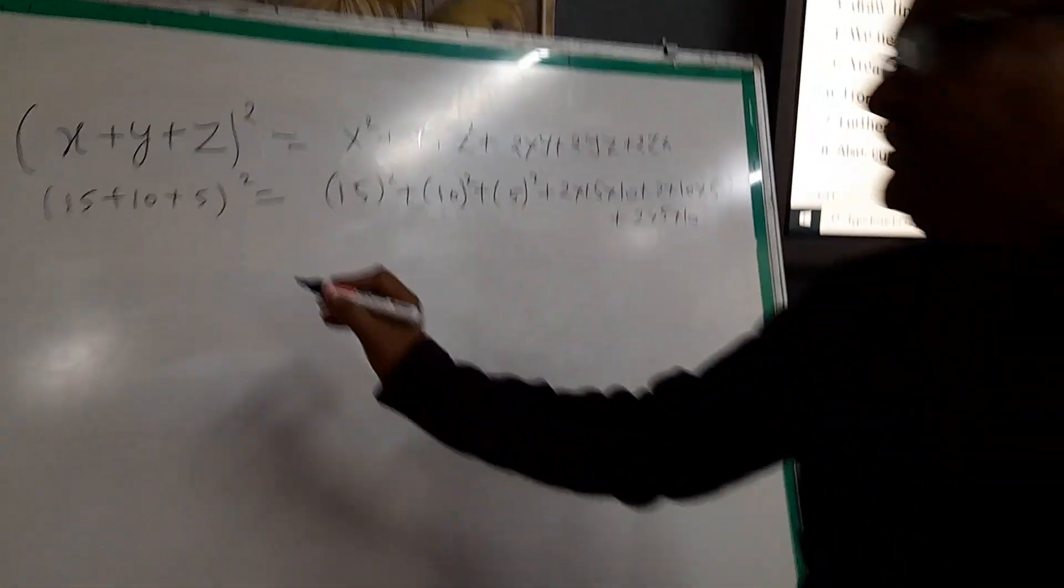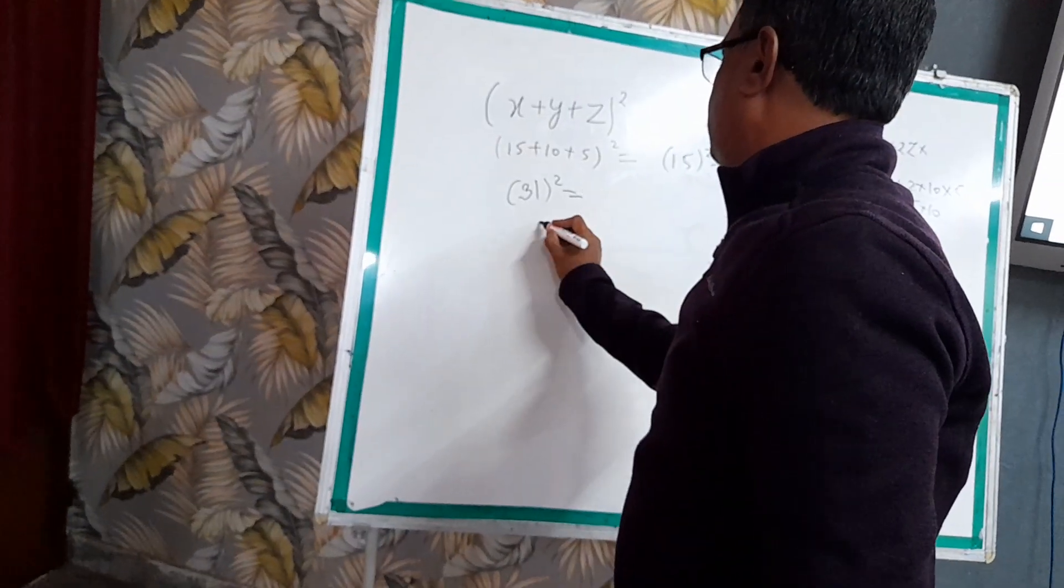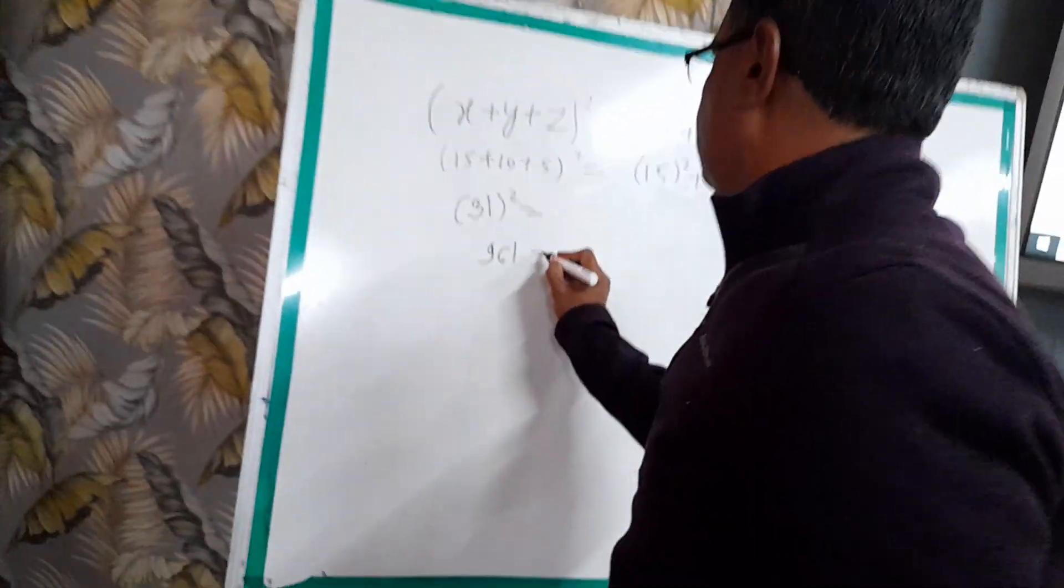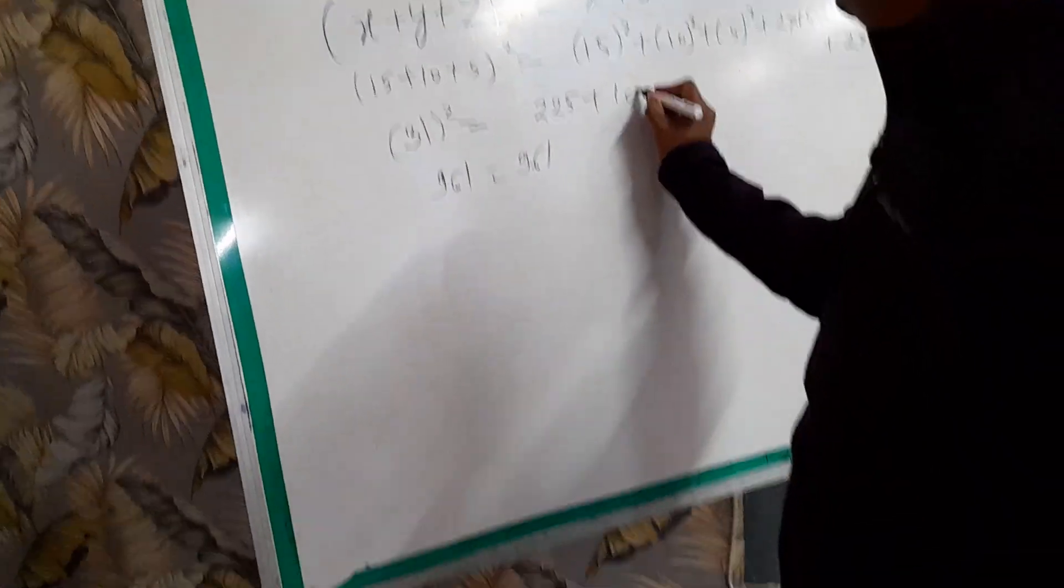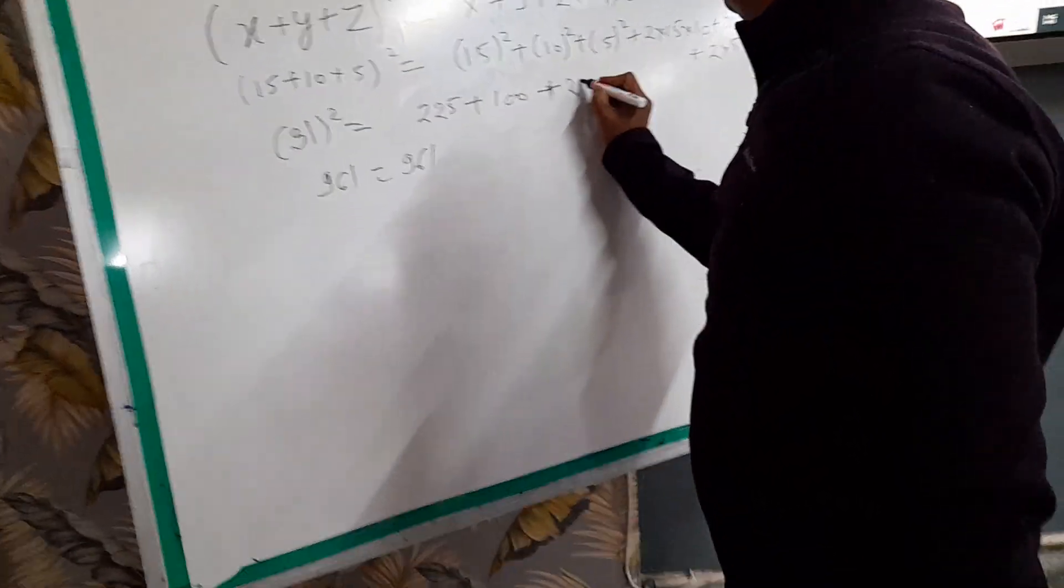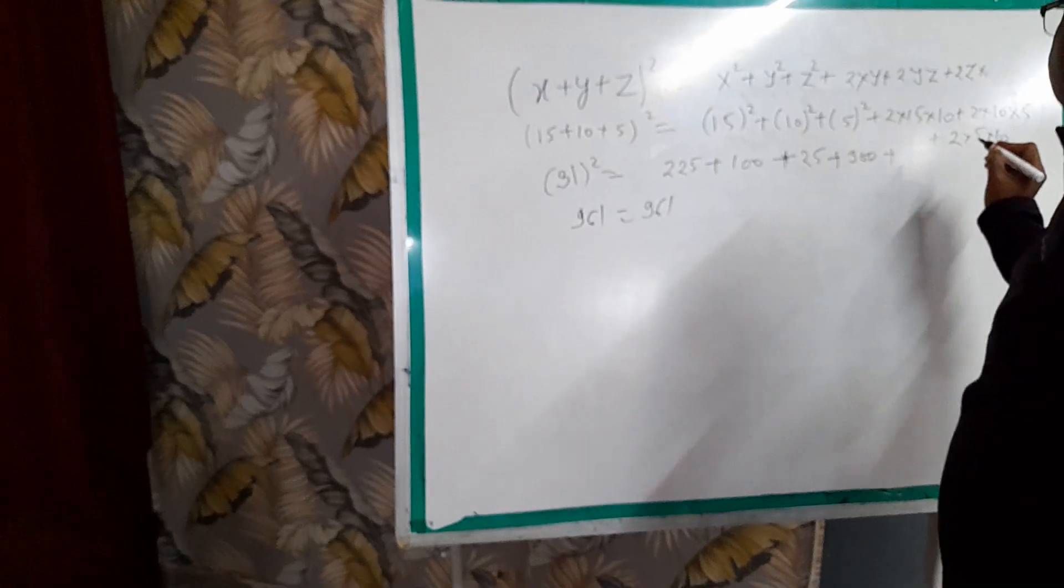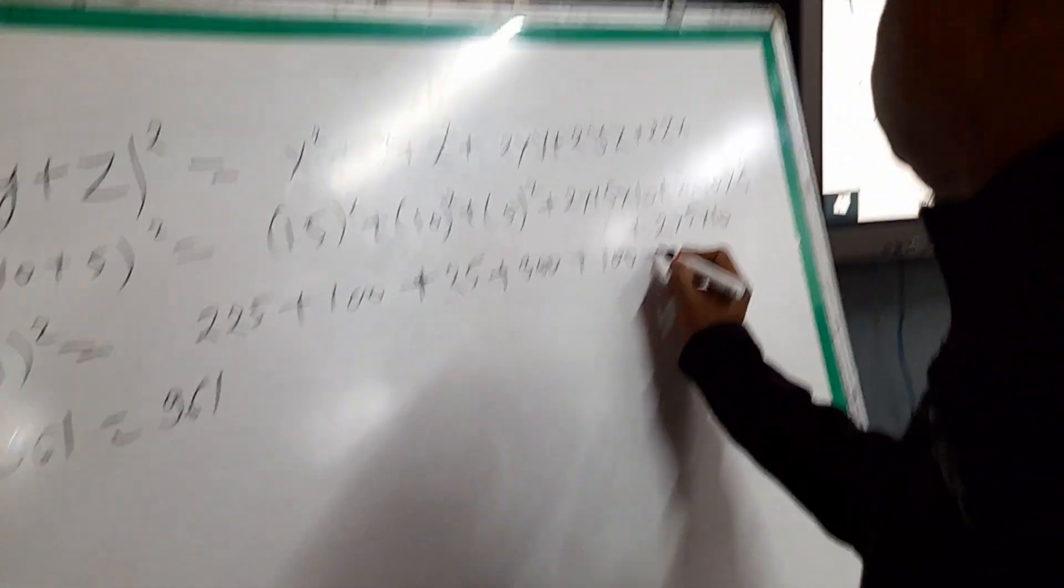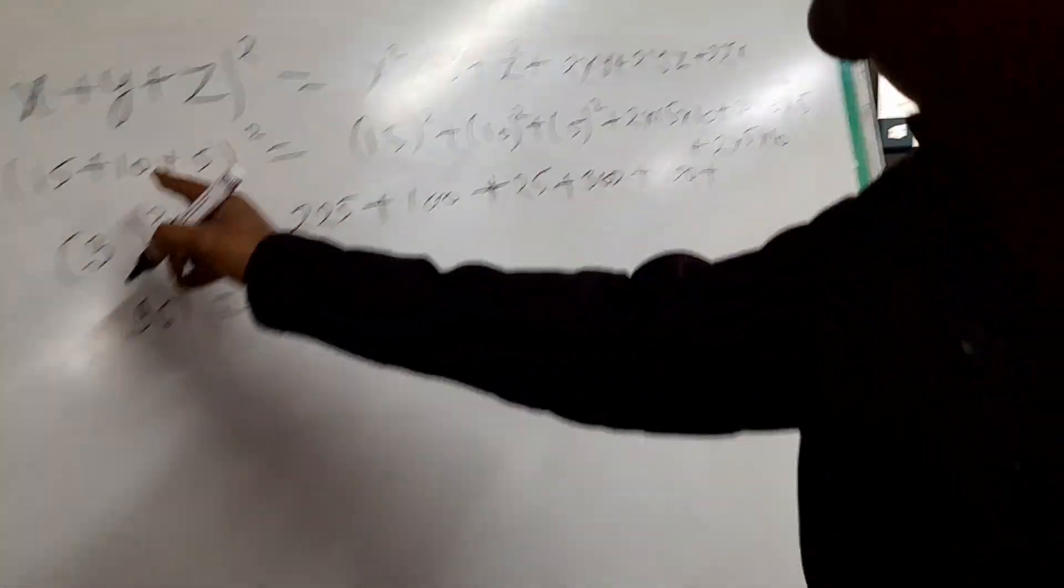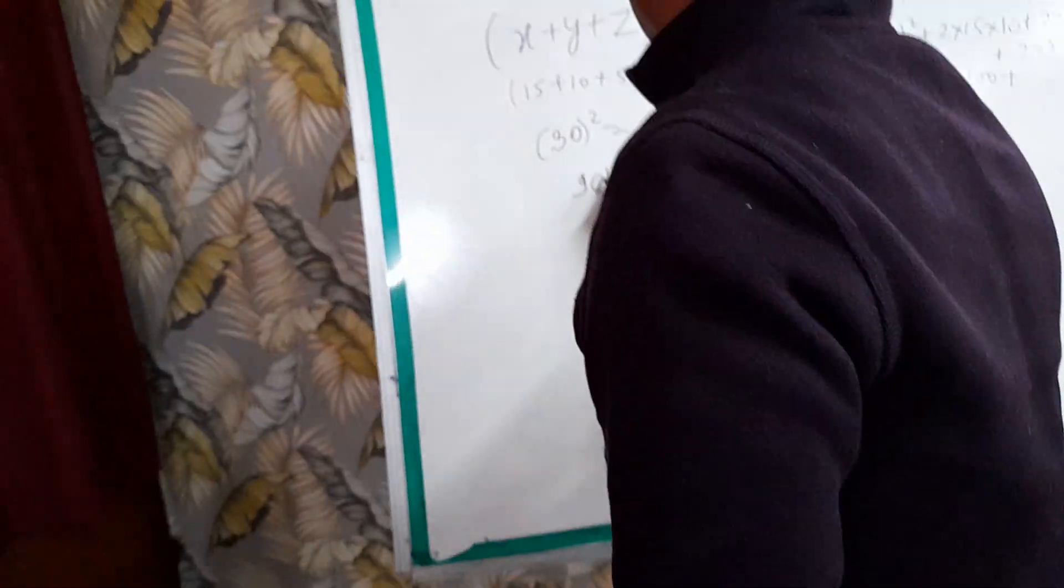We will come to the conclusion that LHS equals RHS. 30, 30, 9, 20.